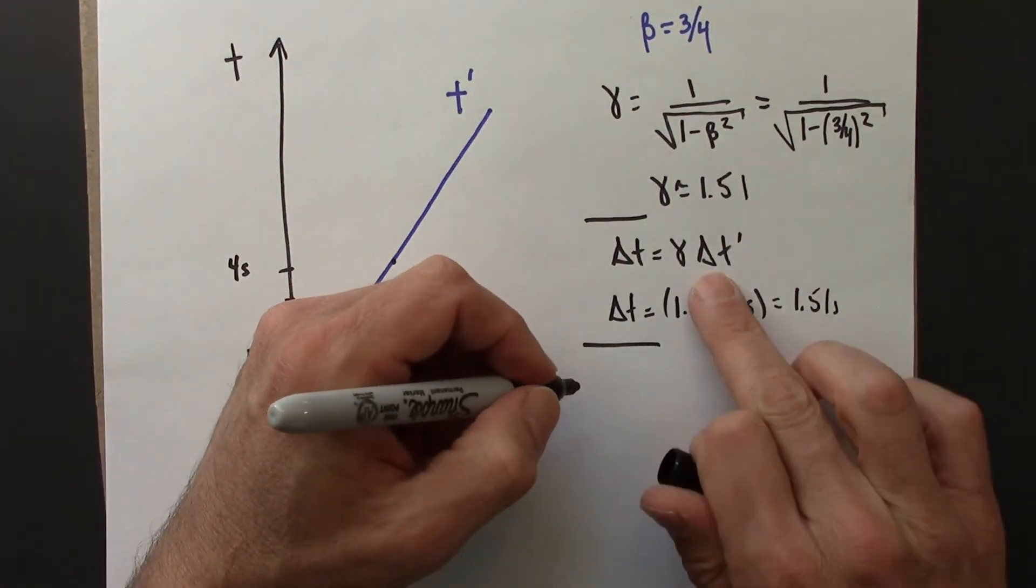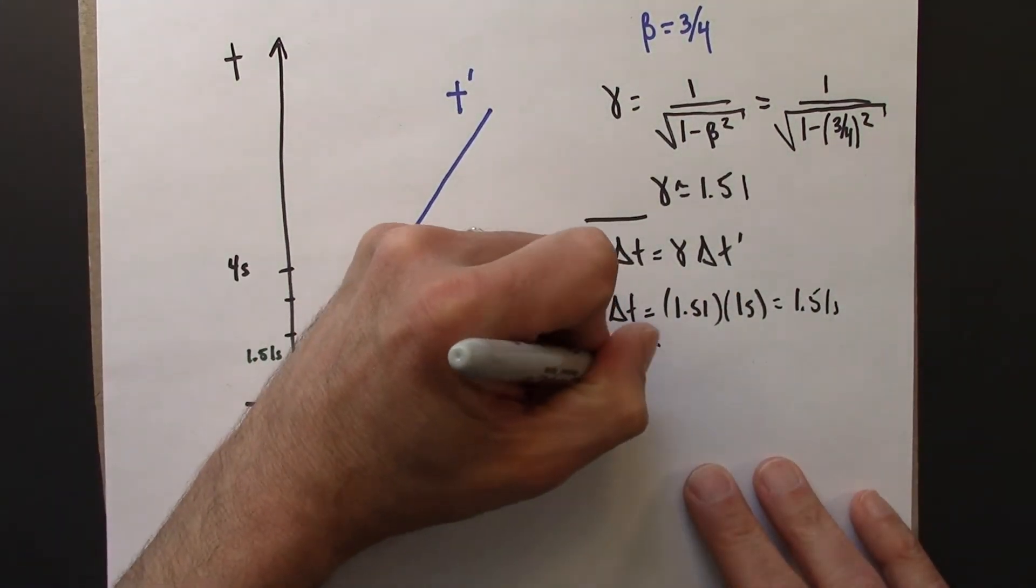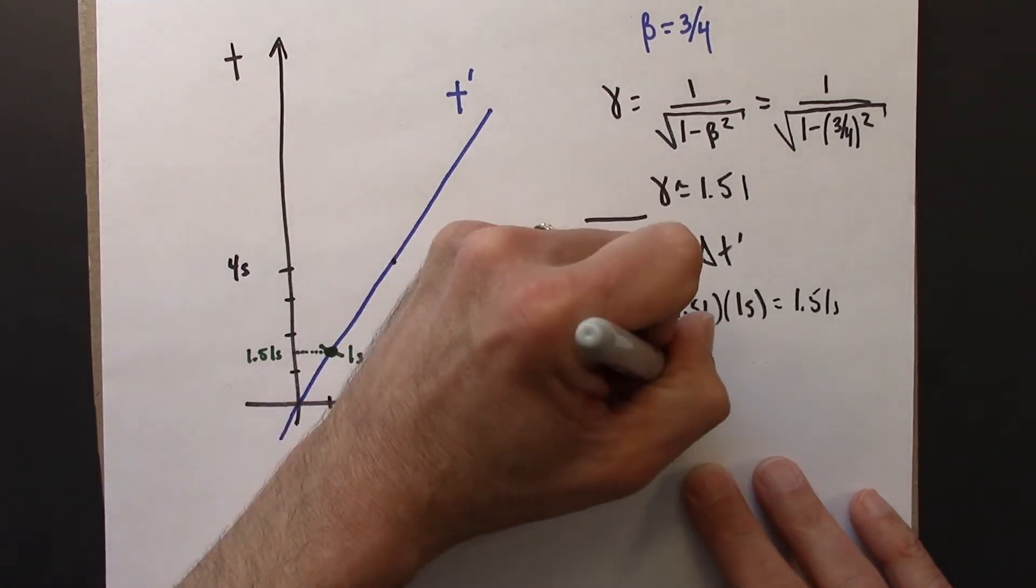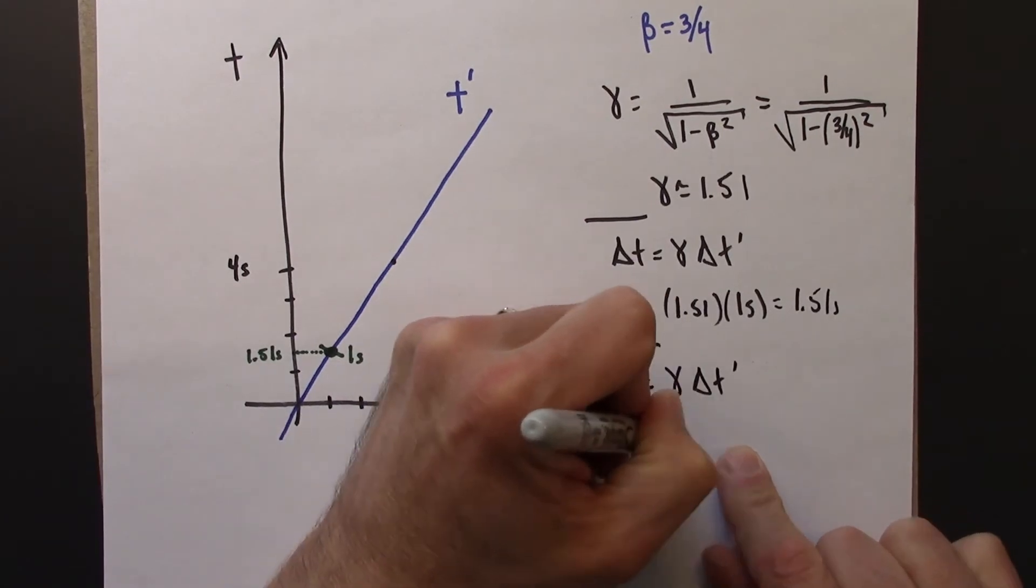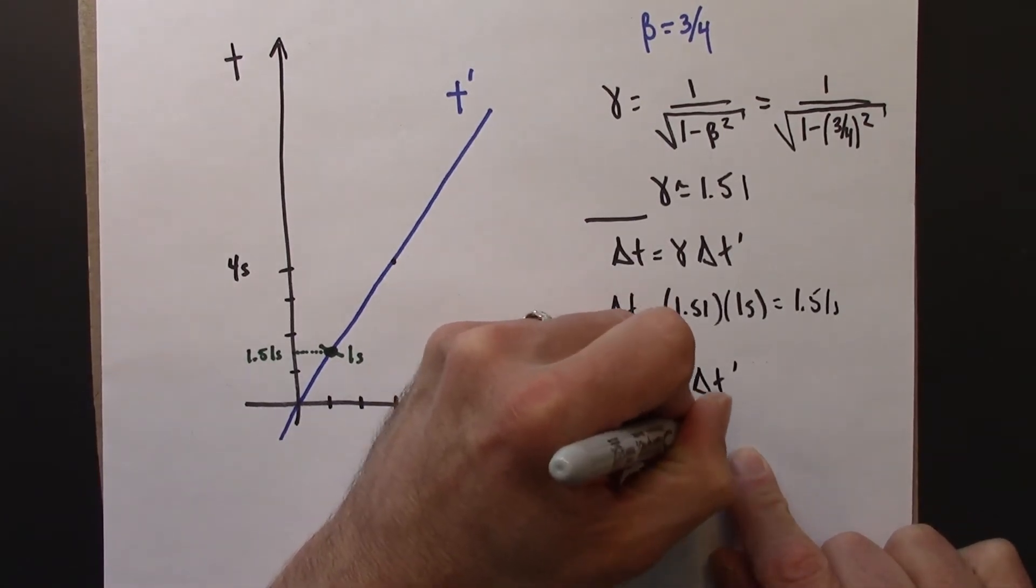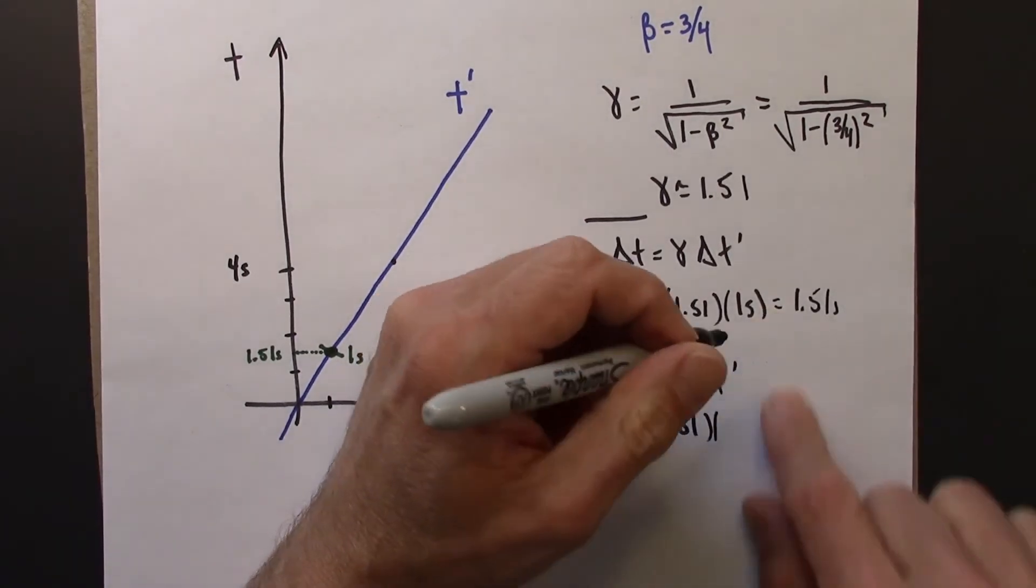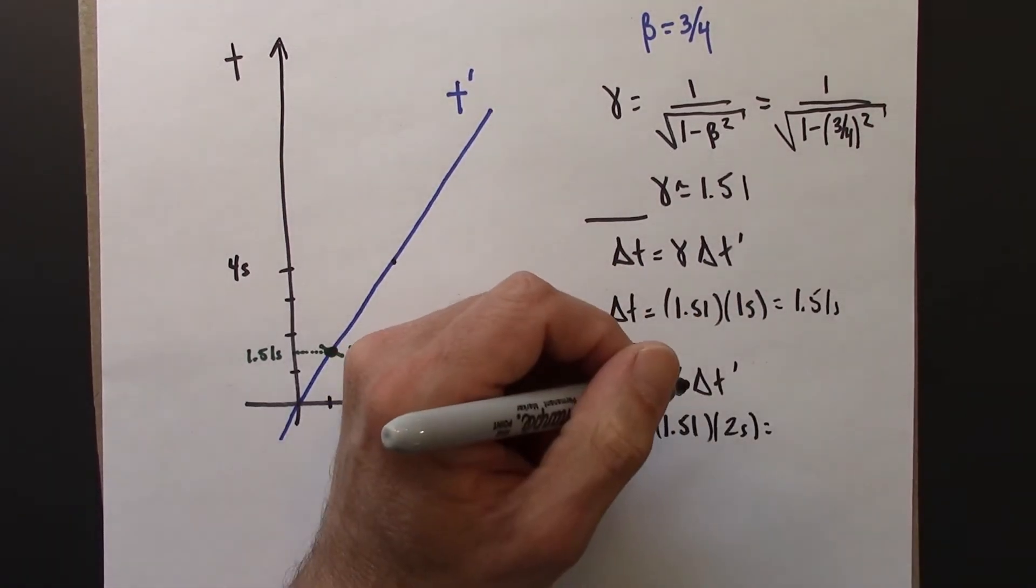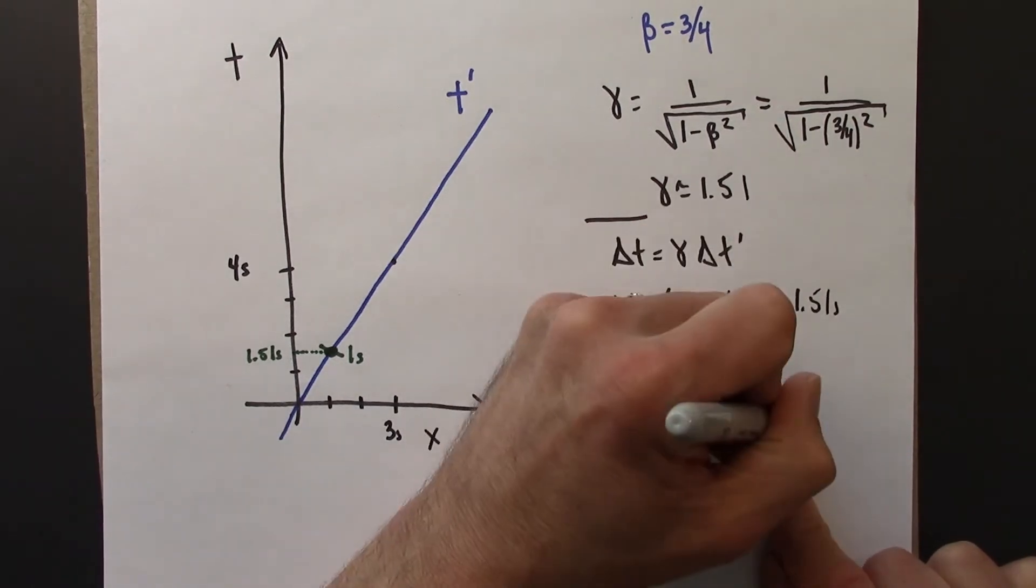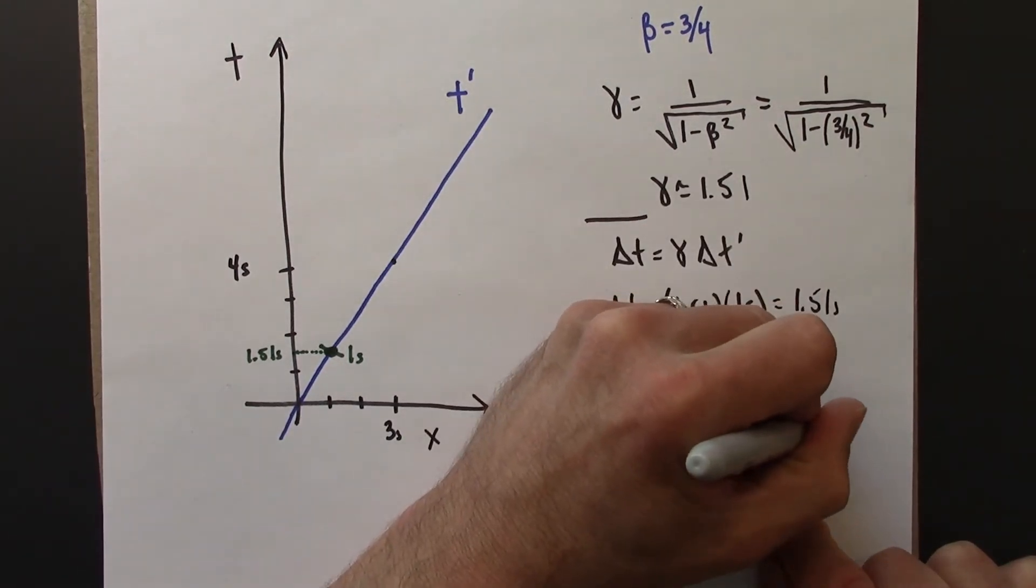We're going to use the same formula. Gamma is 1.51, t prime is 2 seconds. So that's going to be 3.02 seconds.